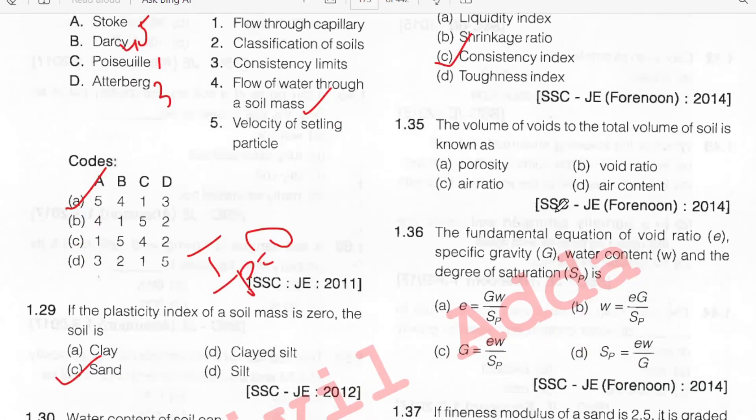Volume of voids to the total volume of soil — VV divided by total volume — is porosity. Option A.